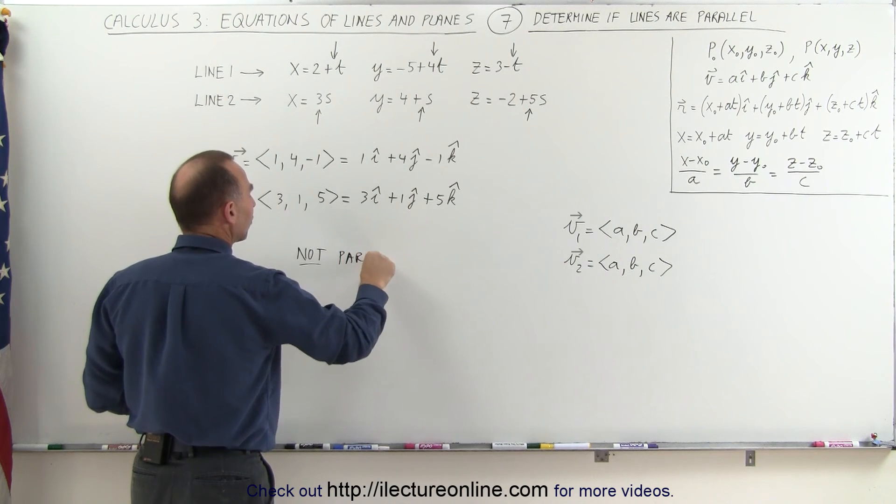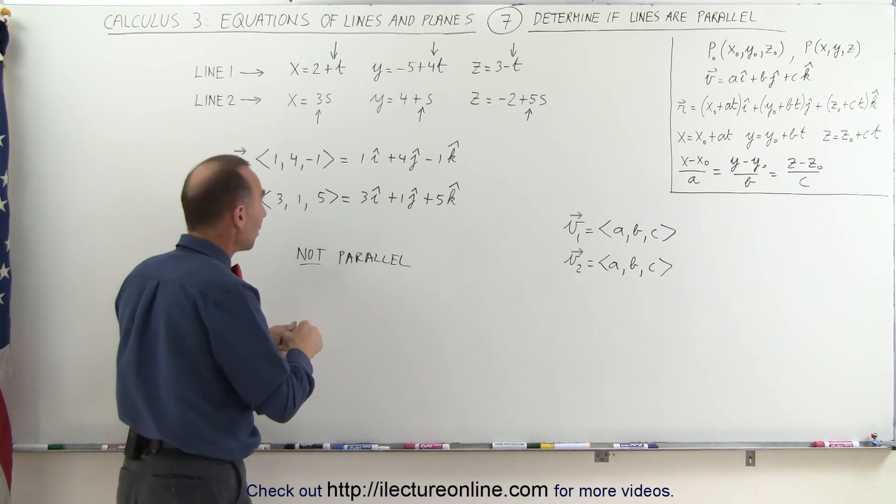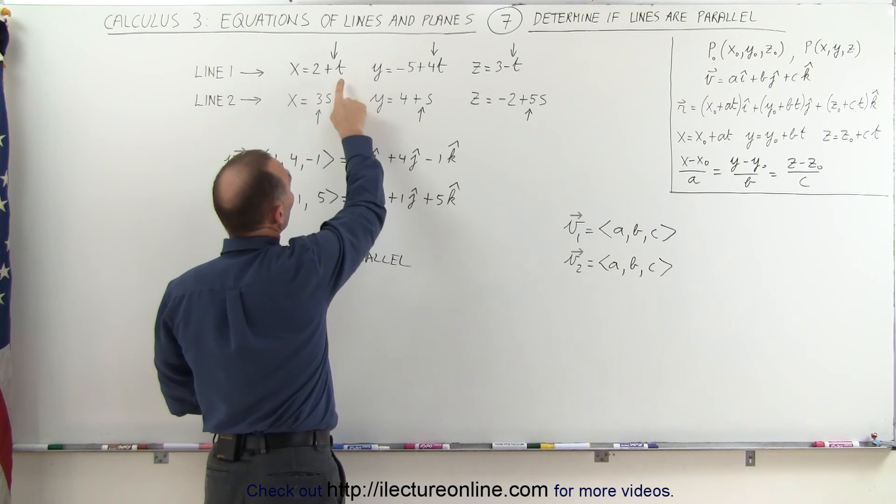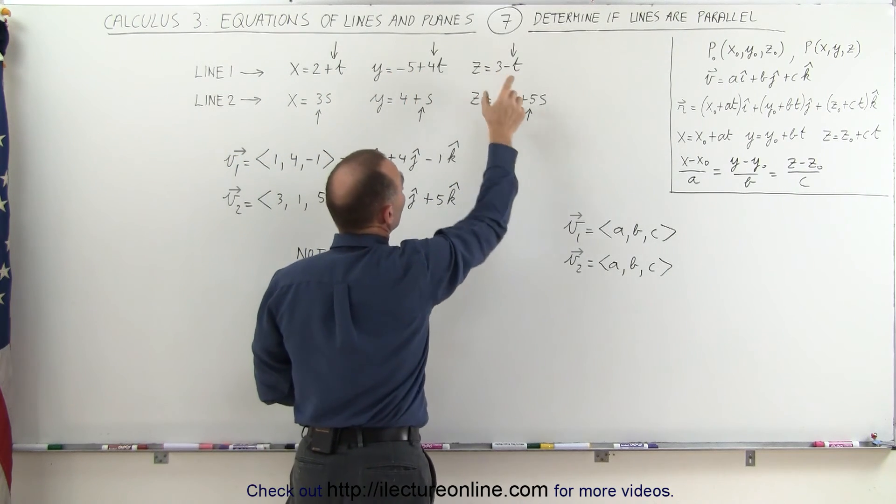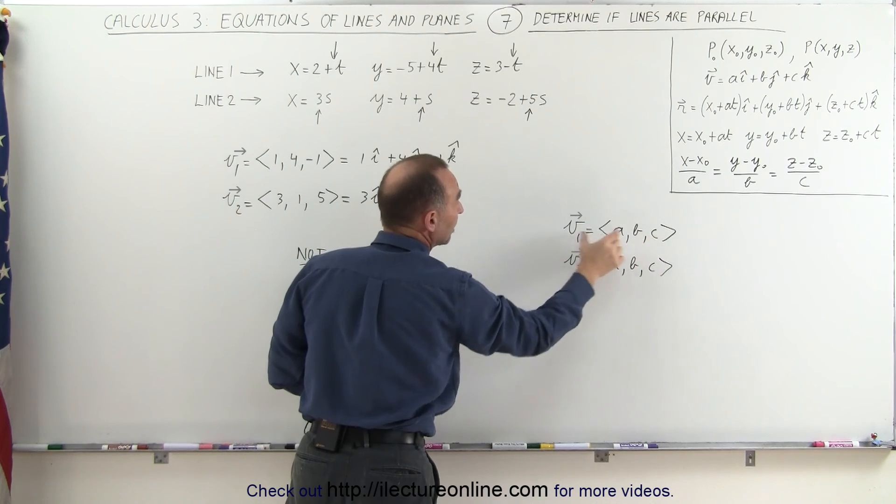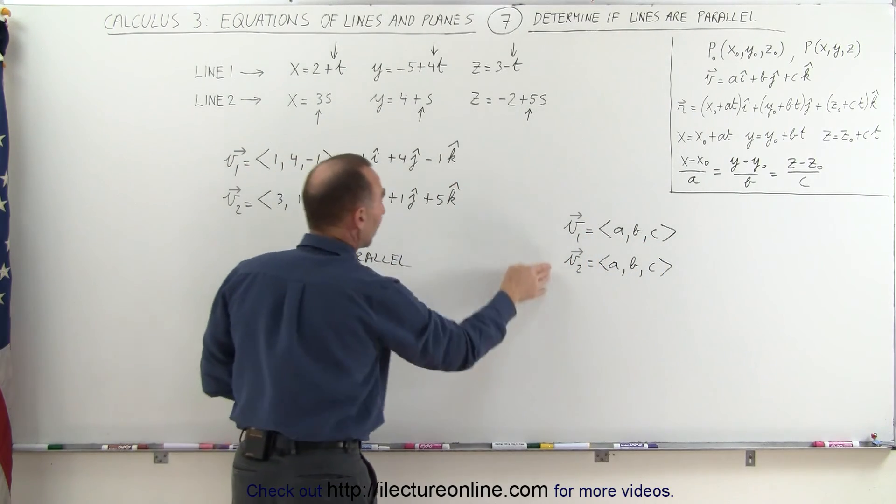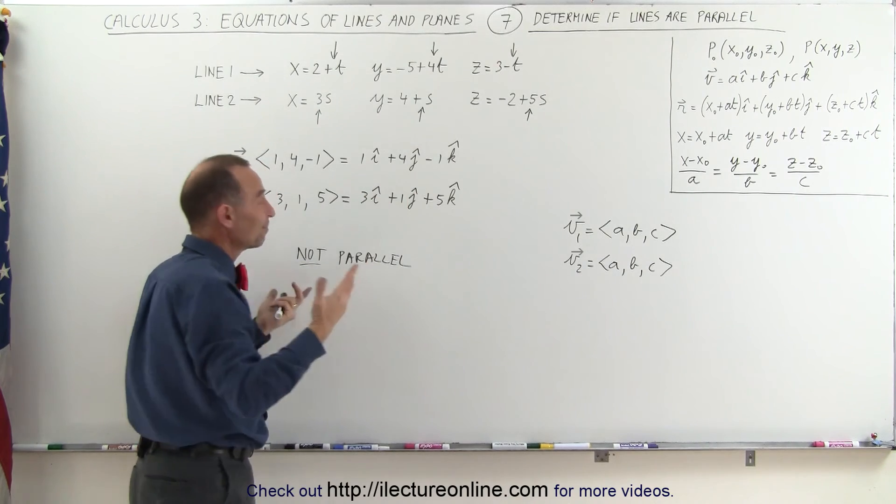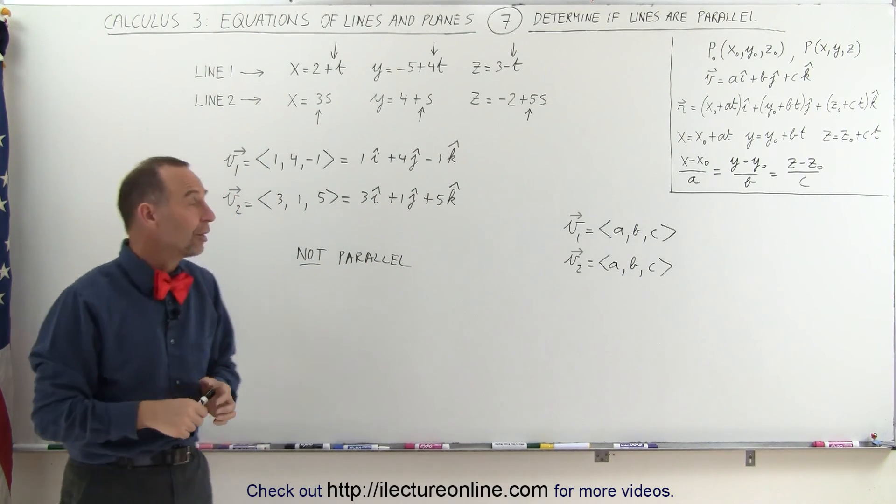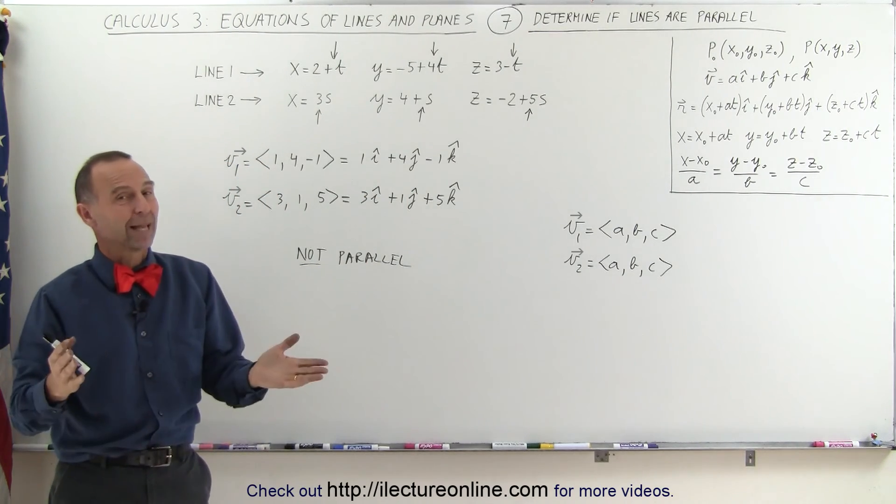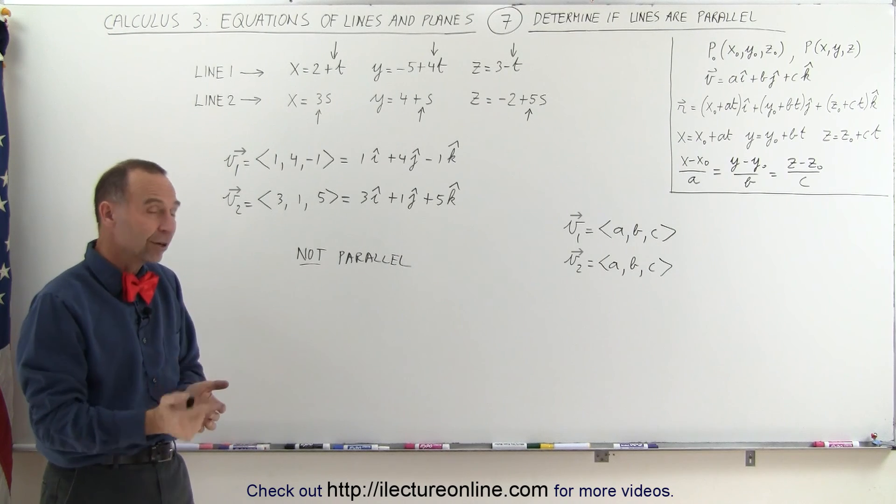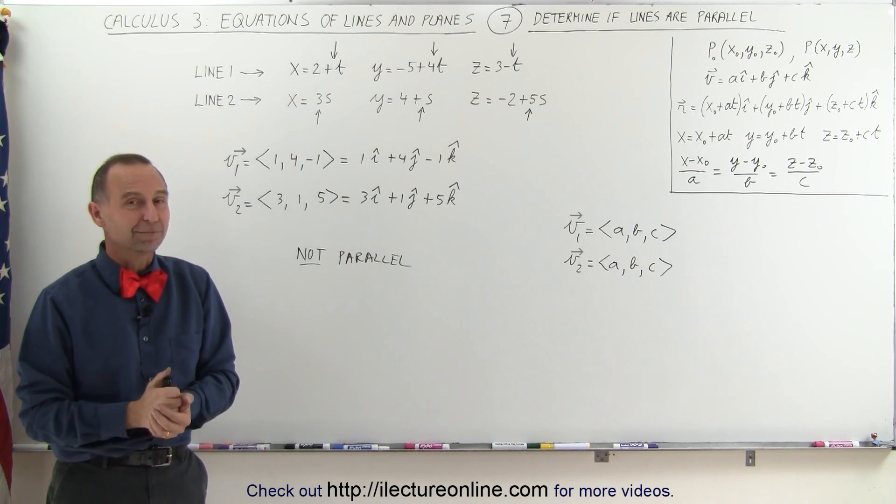And that's how we do that—it's relatively straightforward. What we do is take the parametric equations, take the coefficients in front of the parameter, then reconstruct the vector which is parallel to the line. We do that for both lines, compare the two vectors, and if the coefficients are not proportional to one another, then the vectors are not parallel, and therefore the lines are not parallel.